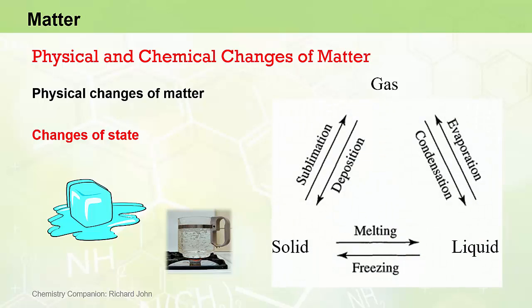We can represent these physical changes of state in this diagram here where we can see the physical transformations that take place between solids, liquids and gases. For example, we can transform a solid to a liquid via the process of melting. Going from a liquid to a gas is known as evaporation, and we can condense gases back to their liquid state by lowering the temperature. Similarly, we can freeze solids to transform them from their liquid state to the solid state.